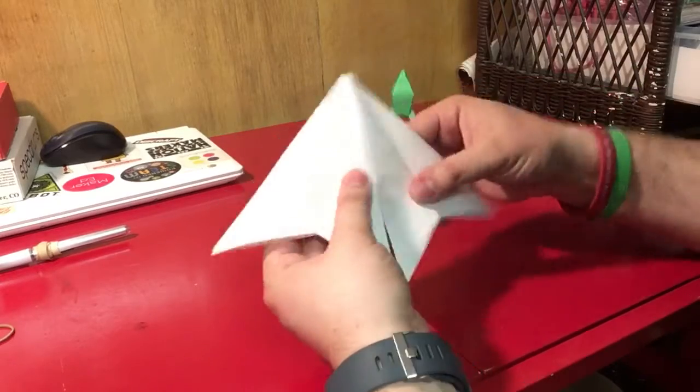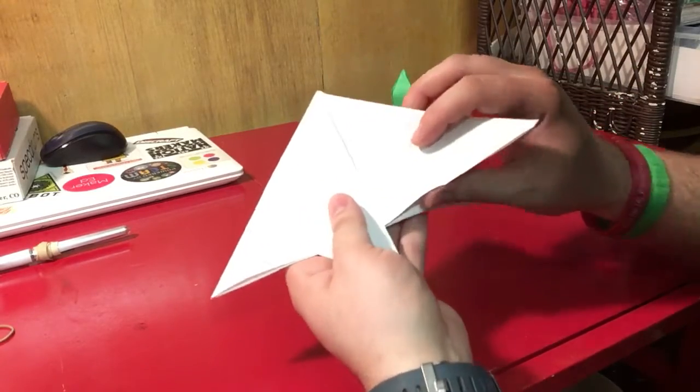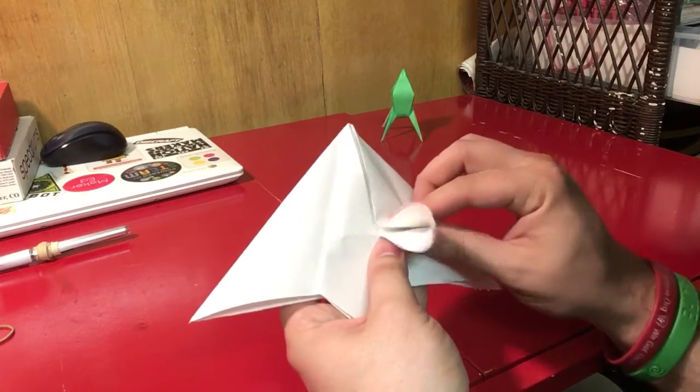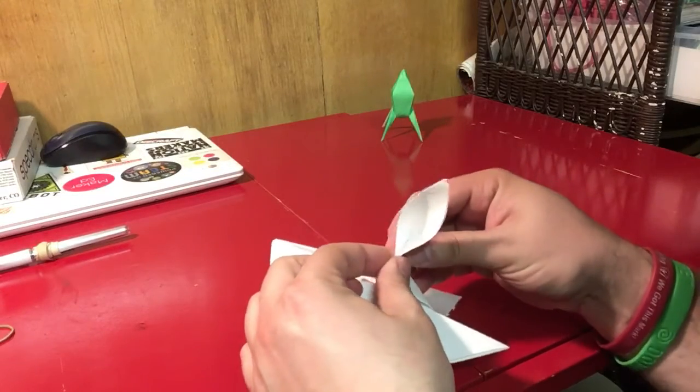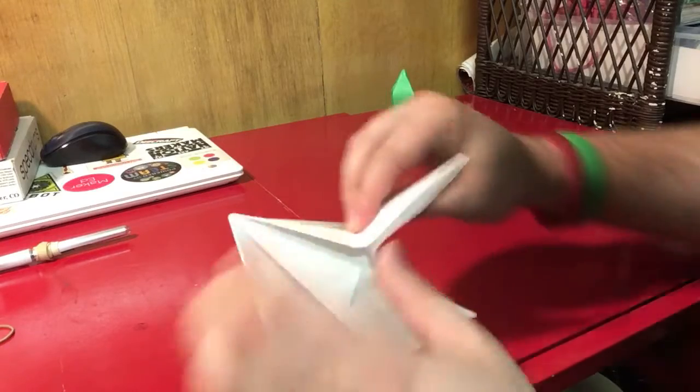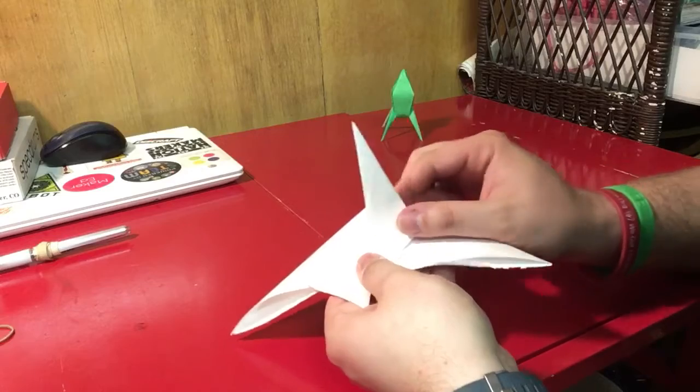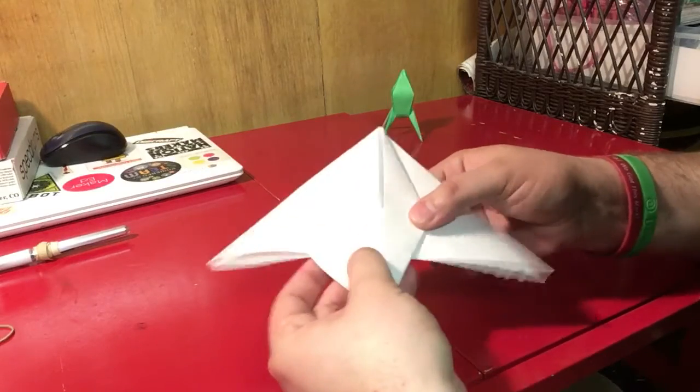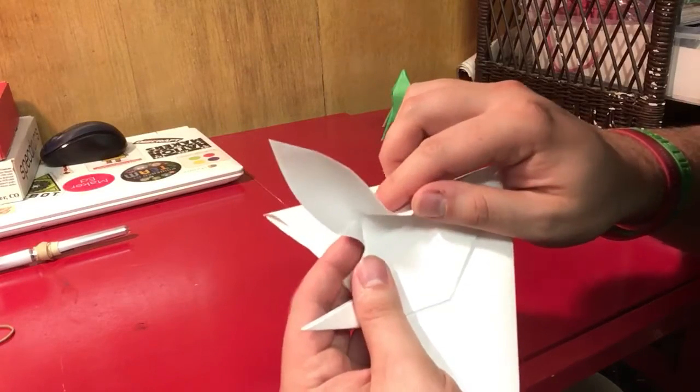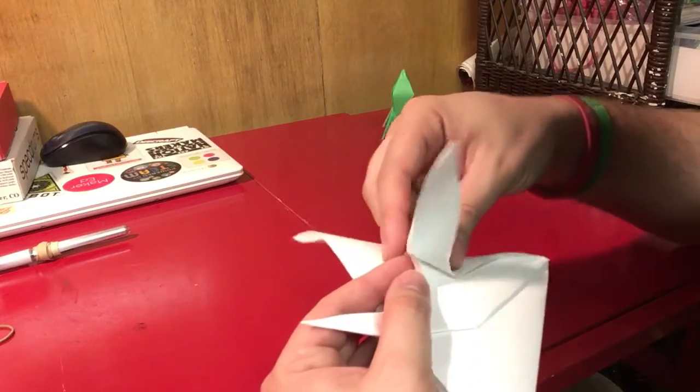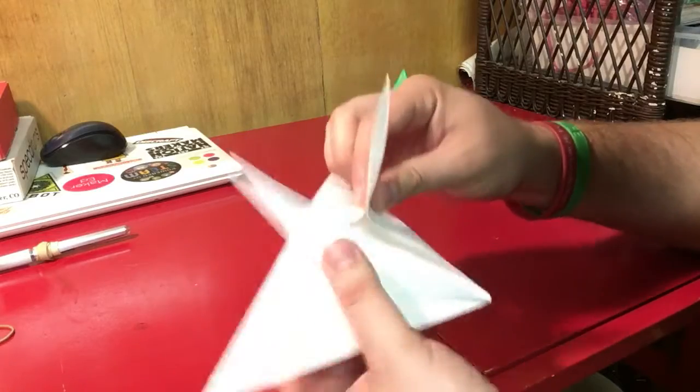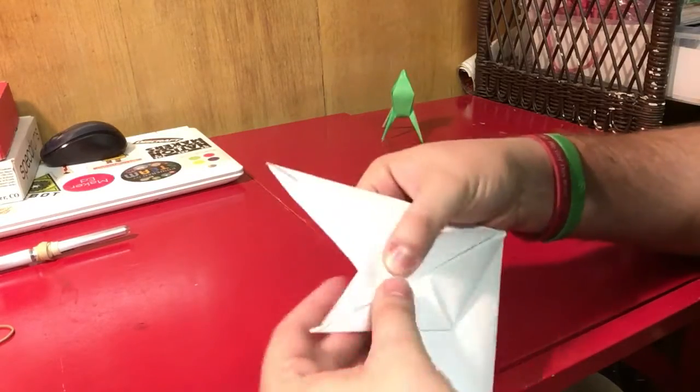Unfold them and now fold those same flaps down so they come to a point at the top. Now unfold that and refold the two folds together. Line up the edges to make it come to a point, then fold downwards. Do the same to this side: unfold, refold along those two folds, line up the edges to create a point, and fold down.